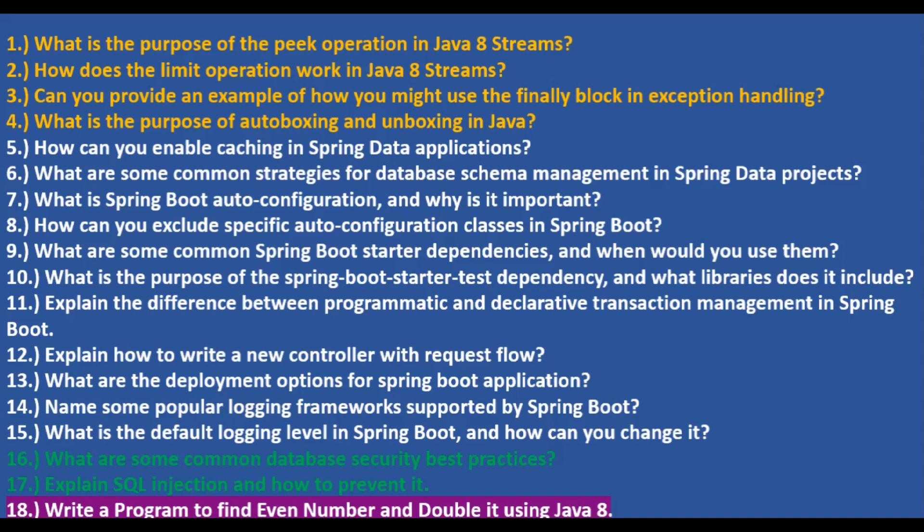How can you enable caching in Spring data applications? You can enable caching by using a caching provider — there are two providers: EhCache and Redis. You then use annotations like @Cacheable, @CacheEvict, and @CachePut. The important thing is to use a caching provider together with the annotation to implement caching in Spring data.